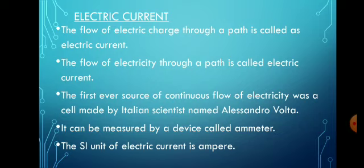Atoms consist of three things: electrons, protons, and neutrons. We are not going into the details of atomic structure here. Specifically, electrons are negatively charged particles present in the atom, and these are responsible for the creation of electric charge. When electrons get transferred, charge is created. This flow of electric charge through a path is called electric current. So there are two definitions: one, the flow of electric charge through a path is called electric current; two, the flow of electricity through a path is called electric current.